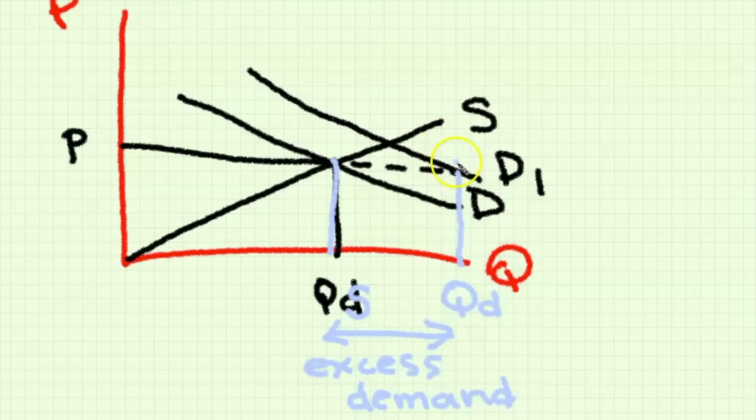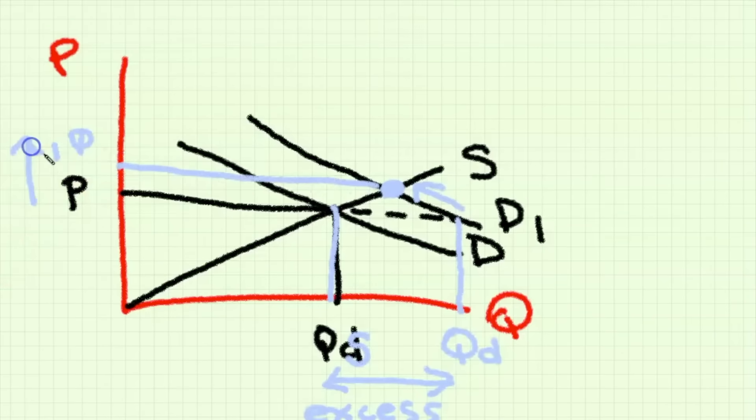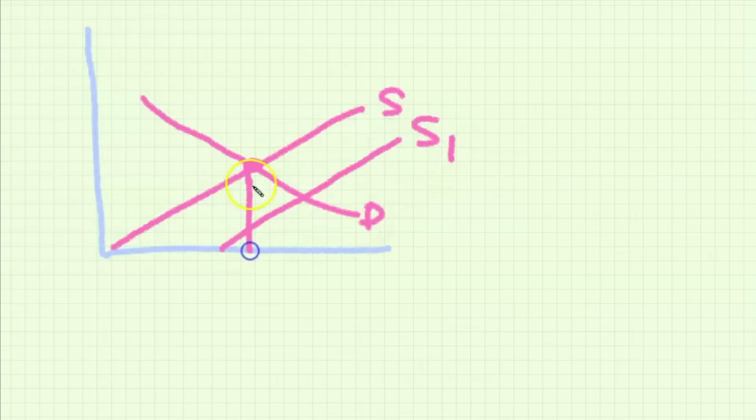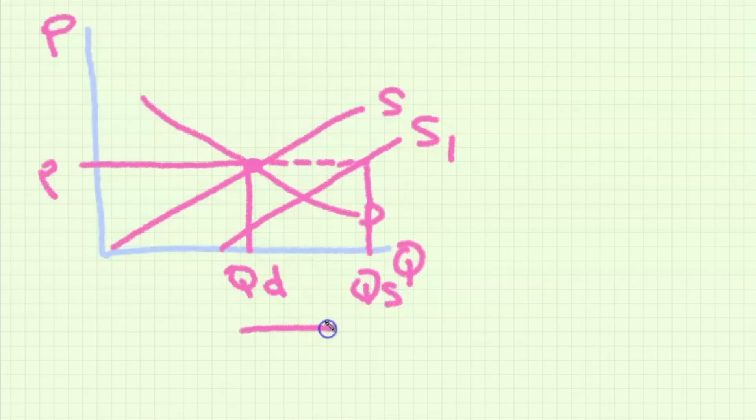Because now that demand has increased, consumers prescribe more utility to the good, so to reach equilibrium again price has to increase. A similar thing happens if suddenly we have an increase in supply from S to S1. Now because there's more supply this leads to downward pressure on the price. If price stays the same then we have an excess supply or a surplus. So for us to reach equilibrium again for the market to clear we need a decrease in the price.